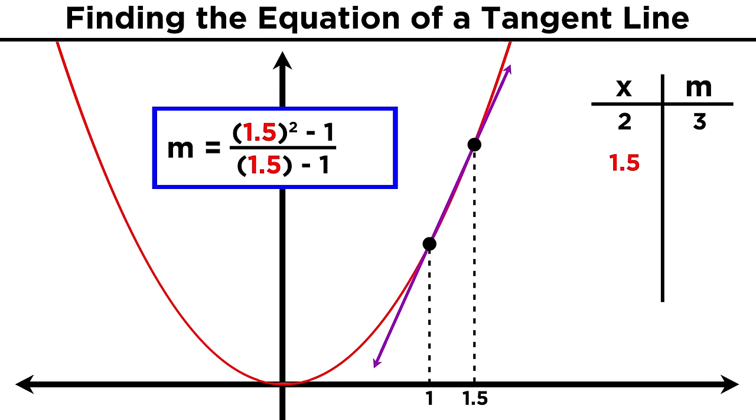Now let's try plugging in one point five. X squared will be two point two five, so we get one point two five over zero point five, which gives us two point five as the slope.